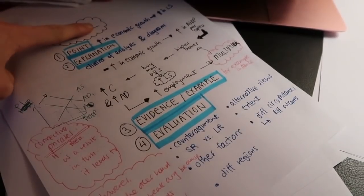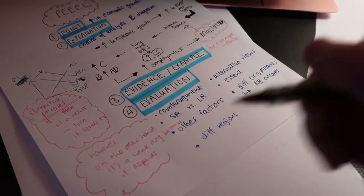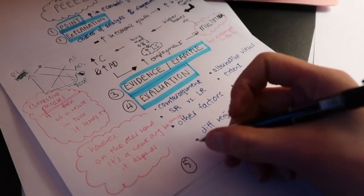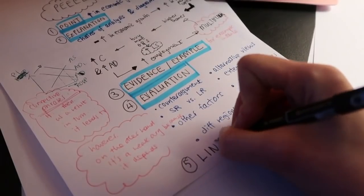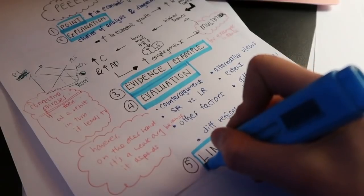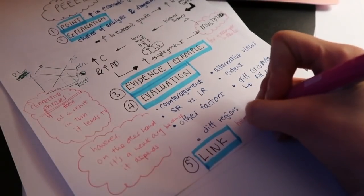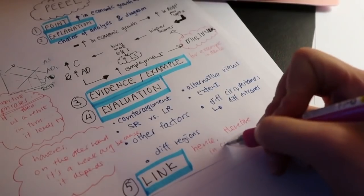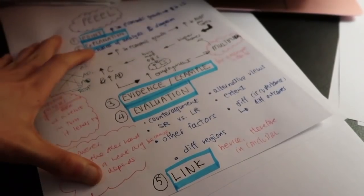The final letter of PEEL — L — stands for Linking back to the question. You've got to link it back to the question to show clear relevance. It's a brief summary of the points you just made, showing that what you wrote is highly relevant to the question being asked. Start this with 'hence' or 'therefore.' It's just a small mini-conclusion for your paragraph. And there you go — that's one paragraph done.